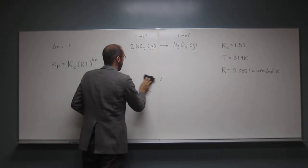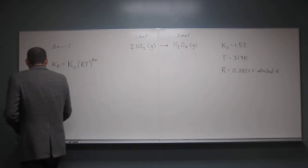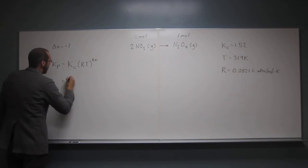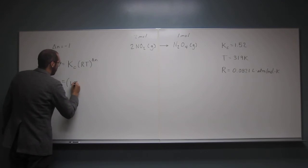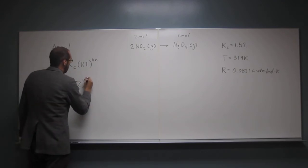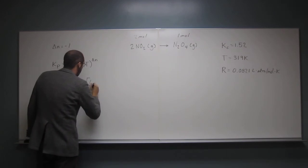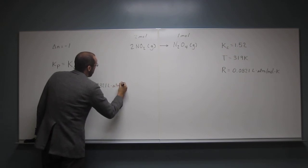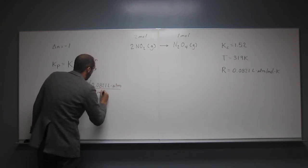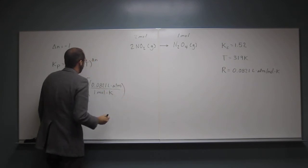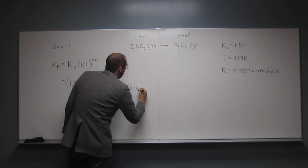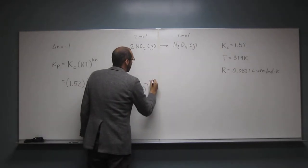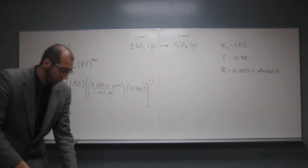I'm going to erase this side. OK, so now we've got everything. It's just really a plug and check problem now. So Kc is 1.52, R is 0.0821 liter atm per mole kelvin, T is 319 kelvin, and that's all to the negative 1 here.